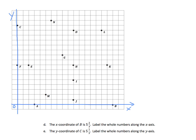Continuing with tasks D and E, it says the x-coordinate of B is 5 and 2-thirds. Label the whole numbers along the x-axis. So if we find that this is 5 and 2-thirds, we can presume that each one of these lines here represents 1-third, and 3-thirds is the same as 1. Counting 1, 2, 3 — that would be labeled 1. Another 3, we'll label it 2. Another 3, label it 3. Another 3, label it 4. Another 3, label it 5. Starting with 5 and going two more intervals, we should have 5 and 2-thirds at B, and indeed that is correct.